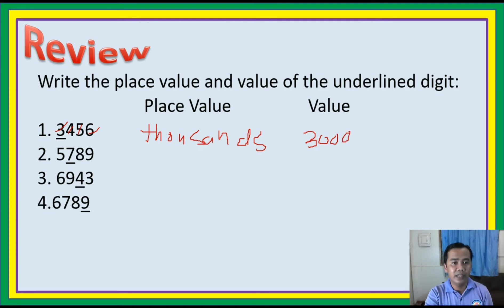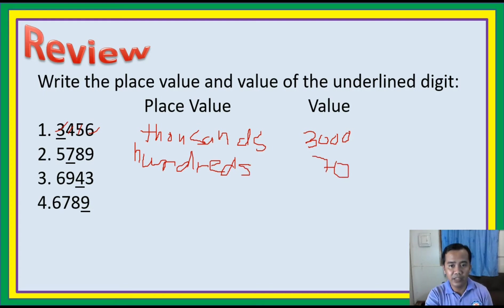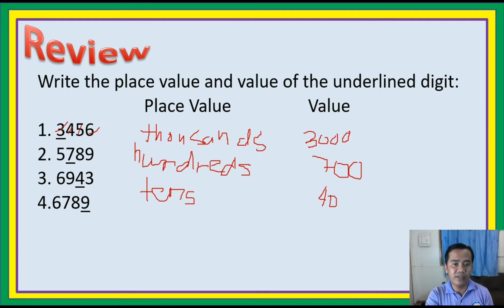Next, what is the place value of 7 in 5,789? Correct — hundreds. And its value is 700. Next, what is the place value of 4 in 6,943? Correct — tens. So the value is 40. What is the value of 9 in 6,789? It is in the 1's place. The value is 9. Keep it up, children.